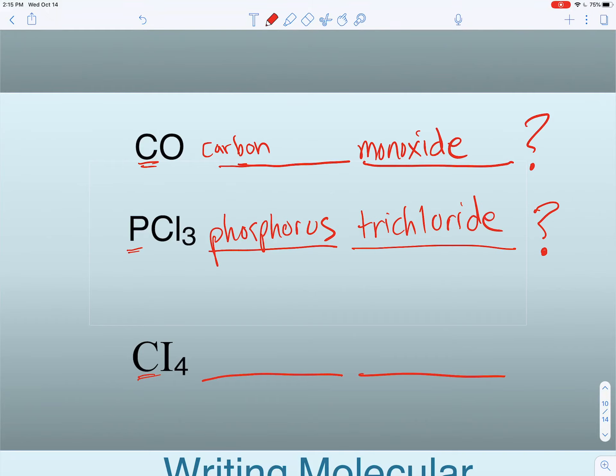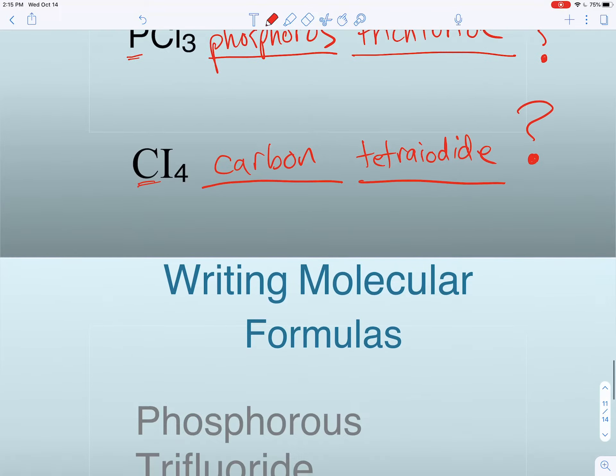And then lastly, we have CI4. What do you think this one's going to be called? Carbon and then we have 4 iodine, so it becomes carbon tetraiodide. A little weird name there, but that's what it's called.